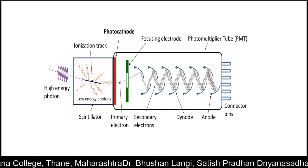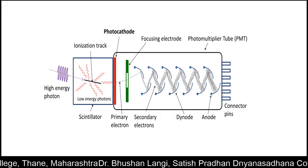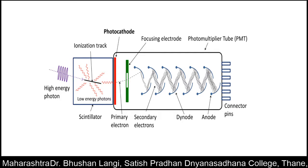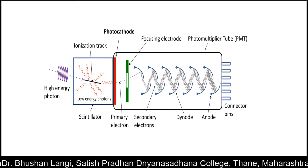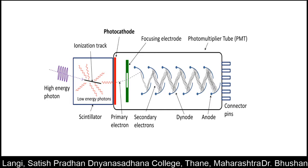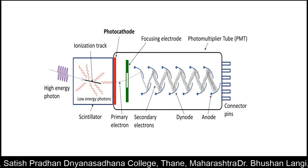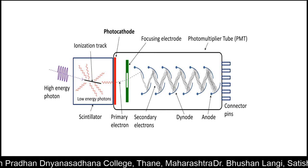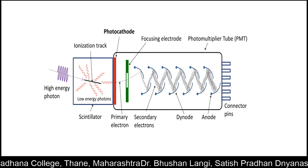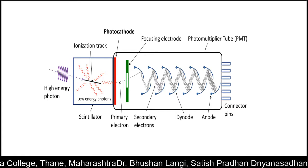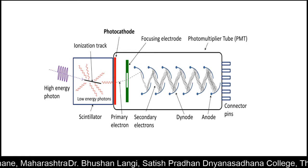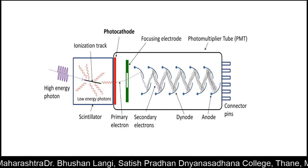The main important parts are the scintillator and the photomultiplier tube. If you observe the scintillator, there is a box where there is an ionization track, and there is a chemical compound known as a phosphor.